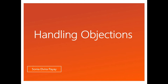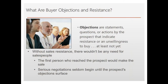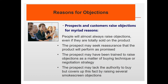Now let's talk about objections and how to handle them. Objections are statements, questions, or actions by the prospect that indicate resistance or unwillingness to buy — but at least not yet, meaning you might still convince them. Without sales resistance, there wouldn't be any need for salespeople. Serious negotiations seldom begin until the prospect's objections actually surface.